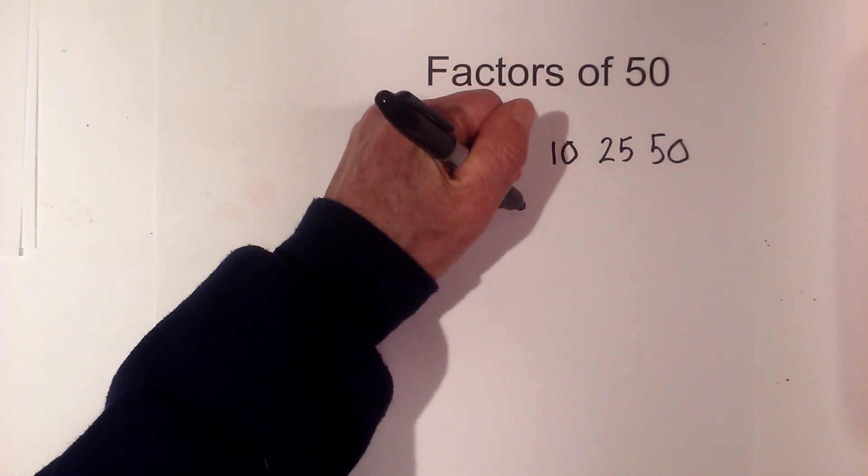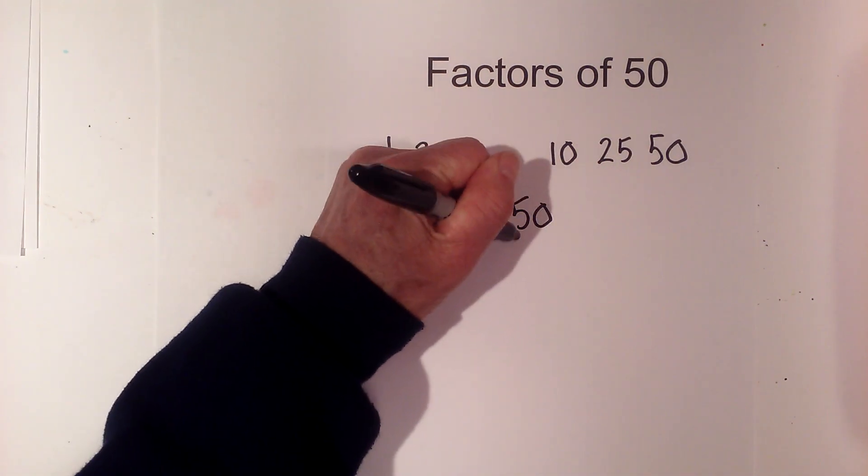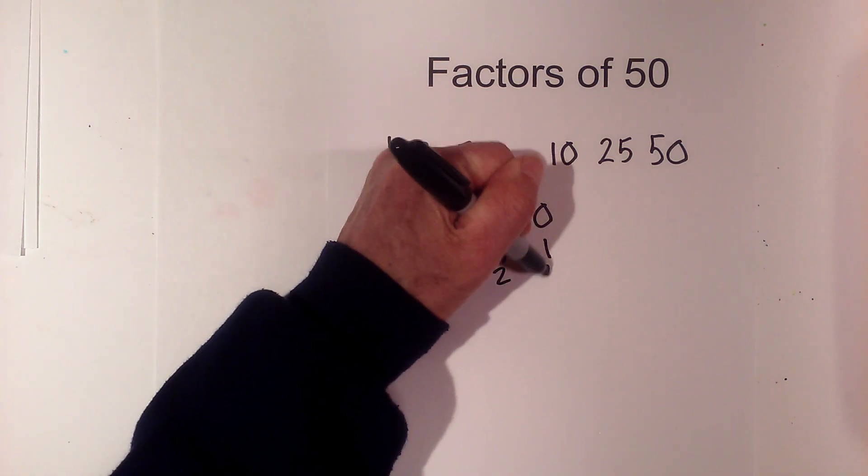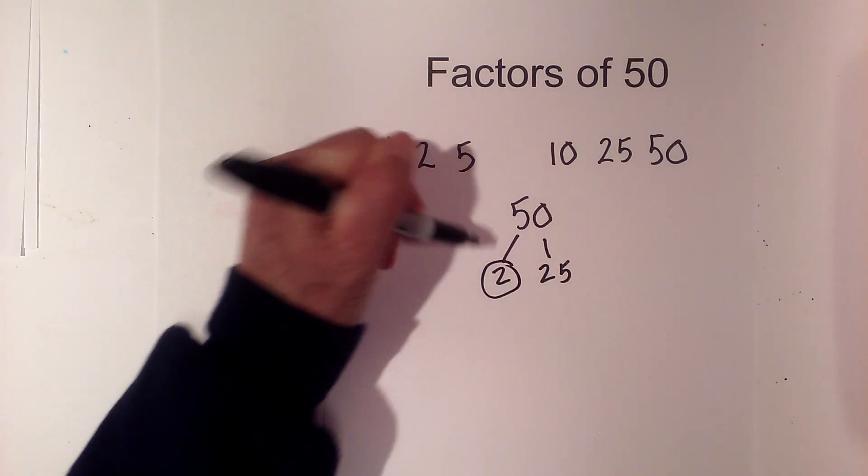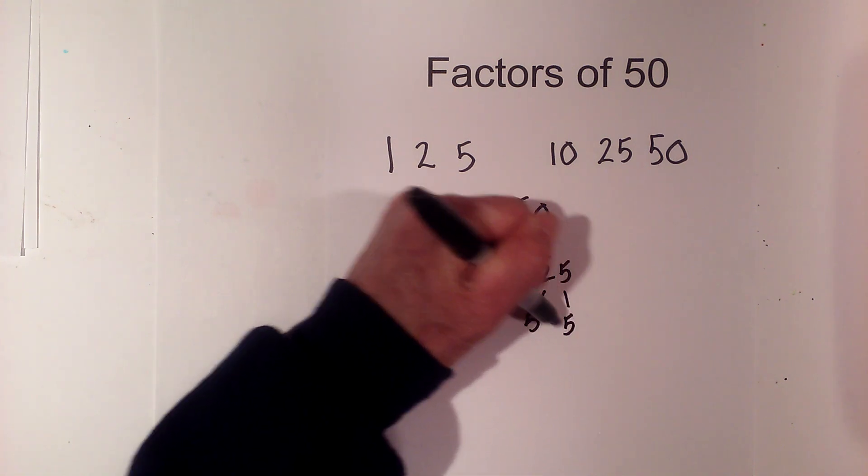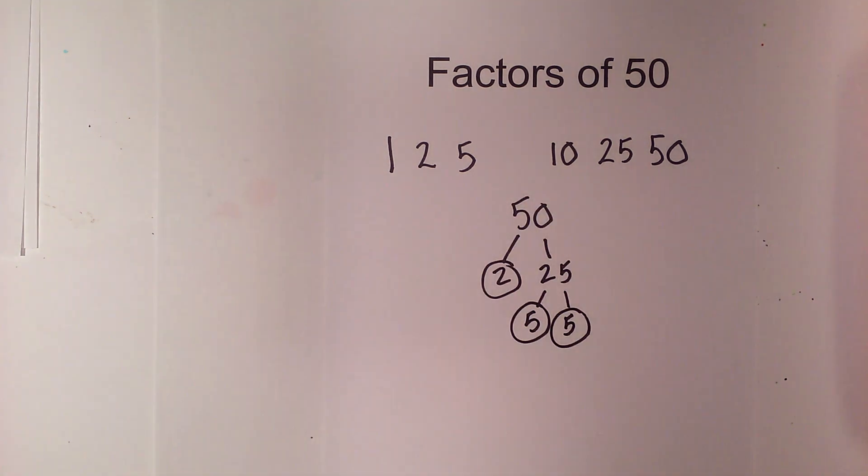Now let's complete a prime factorization or factor tree. 50 is divisible by 2 times 25. Circle the 2 because it is prime, and now 5 times 5 equals 25. Circle both of these because they are prime.